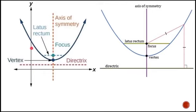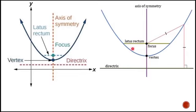The fixed point is called the focus and the fixed line is called the directrix. The line called the latus rectum and the center line — which divides the parabola into two equal parts — is called the axis or axis of symmetry. P is the moving point. The distance between the focus and the moving point is equal to the distance between the directrix and the point, measured perpendicularly.